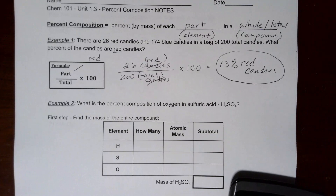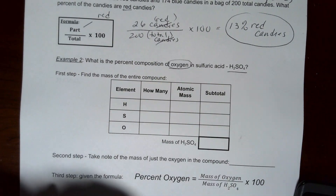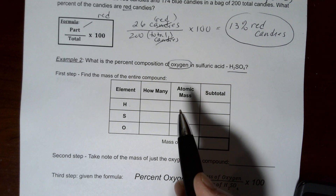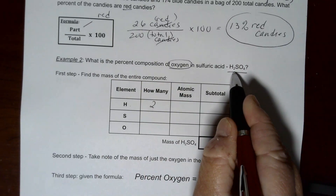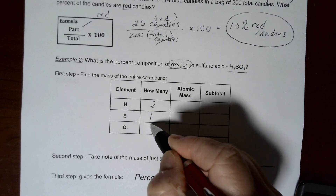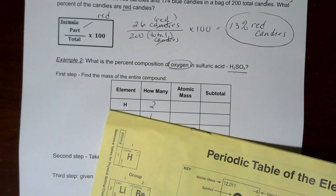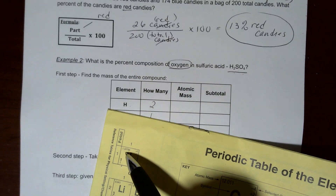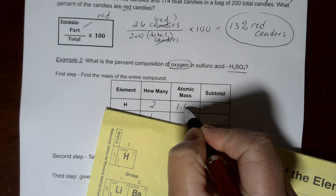Our example will move us into this idea of a compound and we are going to find the percent composition of just the oxygen in sulfuric acid, which is H₂SO₄. First we need to find the mass of the entire compound. We can see there are two hydrogens, one sulfur, and four oxygens. From the periodic table, hydrogen's atomic mass is 1.00794, and we round that to the nearest tenth, which is 1.0 amu.